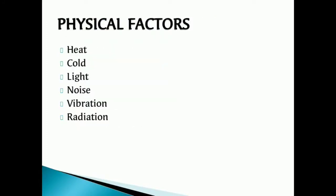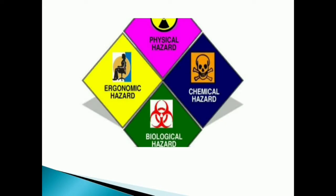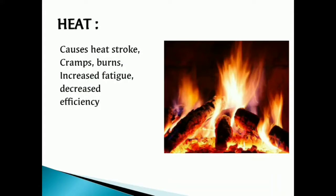Physical factors include heat, cold, light, noise, vibration, and radiations. Ergonomic hazards are the physical conditions that may cause injury to the musculoskeletal system. Heat causes heat stroke, cramps, burns, increased fatigue, and decreased efficiency.